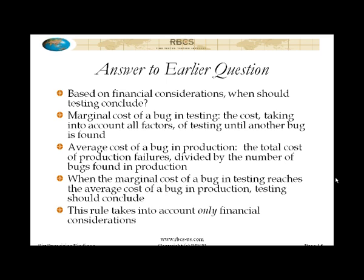We have to ask: what is the average cost of a bug in production? The way to look at that is the total cost of external failure divided by the number of bugs found in production — that's part of the cost of quality calculation. From a purely economics perspective, what an economist would say is: when the marginal cost of a bug in testing — the cost to find the next bug — reaches the point where it equals the average cost of a bug in production, then testing should conclude. Now, this is an entirely financial and economic analysis and does not take into account any moral, ethical, legal, or other considerations. So, if you are testing safety-critical applications, please don't use this as your exit criterion.